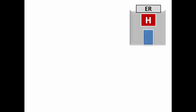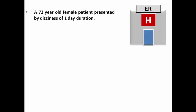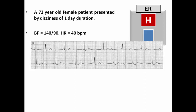We have a 72-year-old female who presented to the ER with dizziness of one-day duration. Blood pressure was 140 over 90 and heart rate was 40, regular. The ECG in the ER showed evidence of complete AV dissociation, suggestive of third-degree AV block.